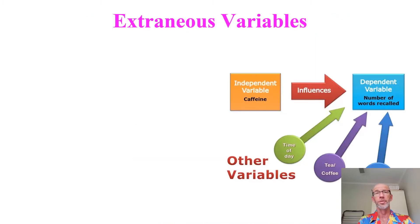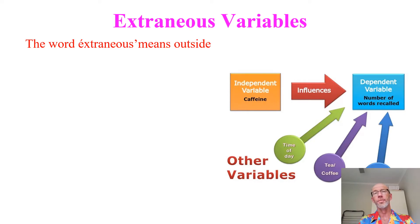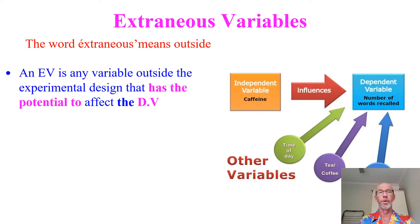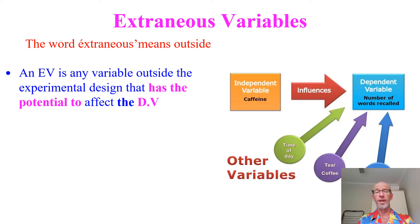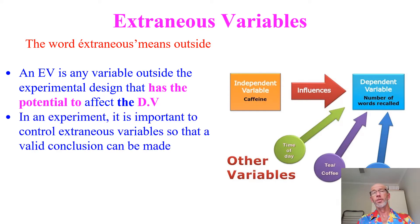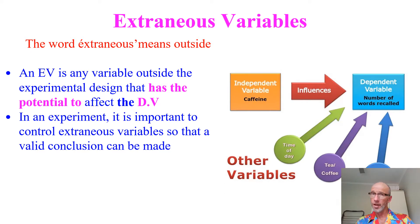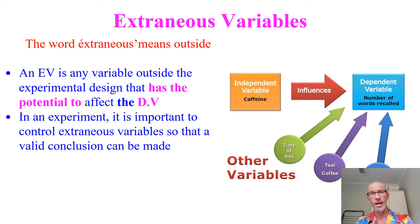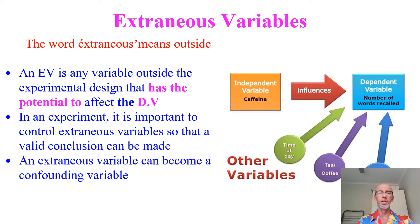Let's start with extraneous variables. The word extraneous means outside — so if you're extraneous to the cool group, you're not in the cool group; you're a cool group wannabe. In science, an extraneous variable is any variable other than the independent variable that has the potential to affect the dependent variable. When designing our experiments, we want to anticipate any such variables, because if we can control them, we'll generate more valid, reliable data and move the field of psychology forward.